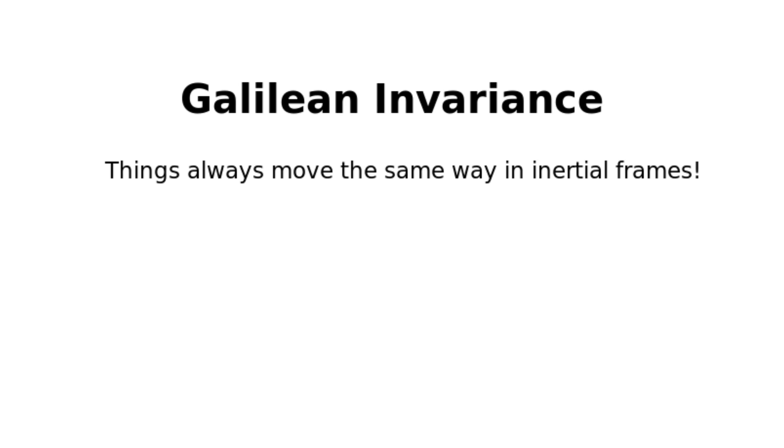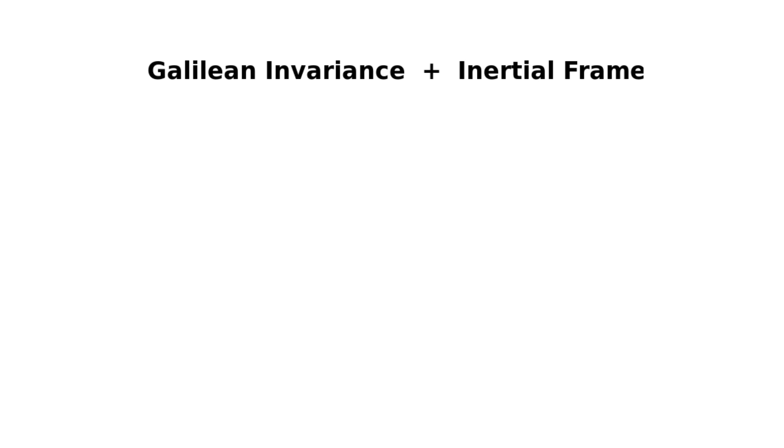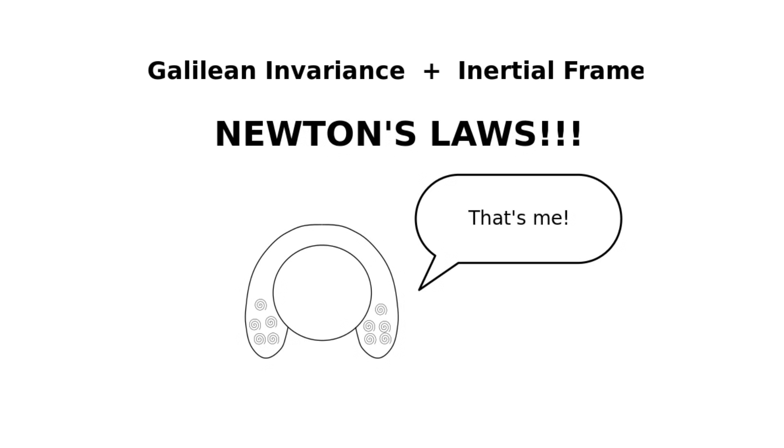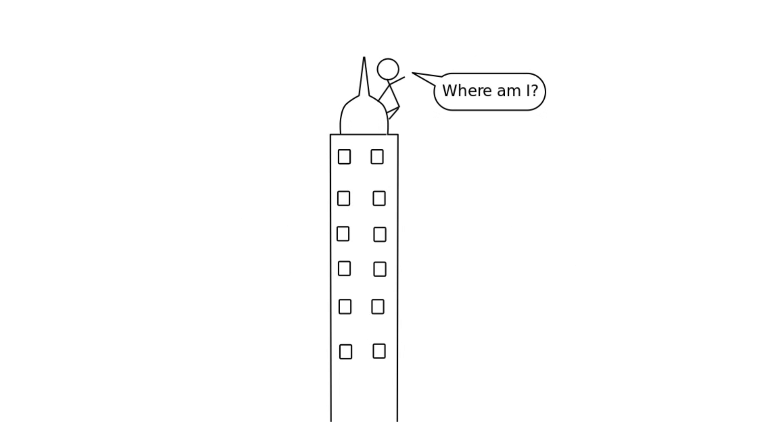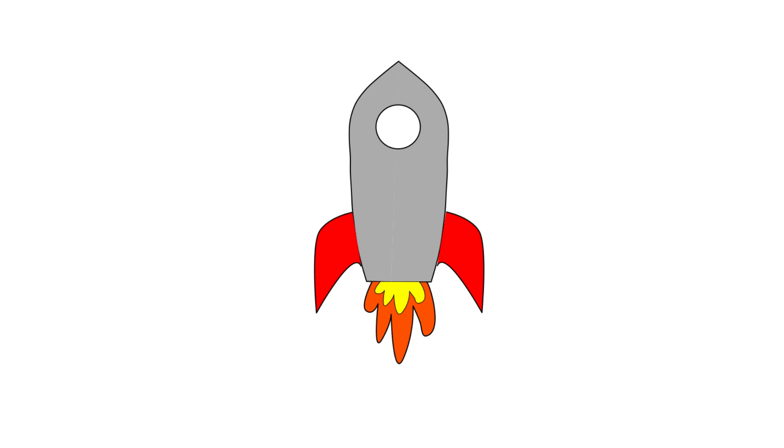The notion of Galilean invariance and inertial frames form the fundamentals for Newton's laws of motion and ultimately the entirety of Newtonian mechanics. Once we know these concepts, we can understand how a motor turns the wheels on your car, how to construct massive skyscrapers, and even how to launch rockets into space.